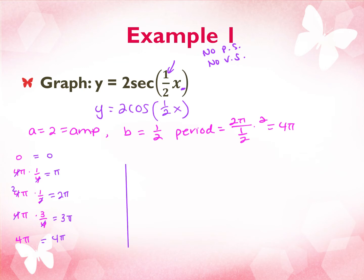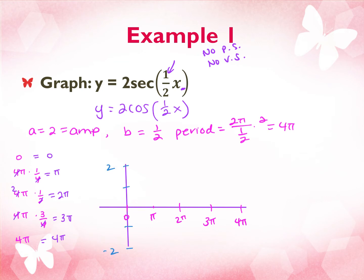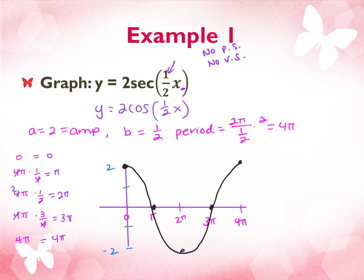I go straight to my graph and put my key points: 0, π, 2π, 3π, and 4π. Then I mark my amplitude. This is cosine, so I start at the amplitude, come back down, go down, go up, go up, and draw my curve.